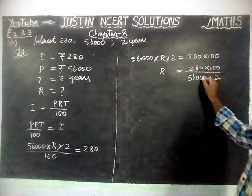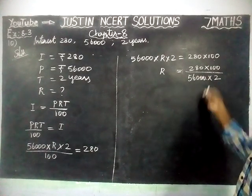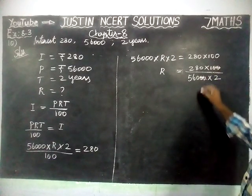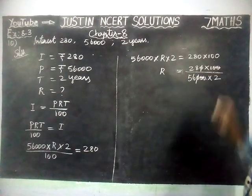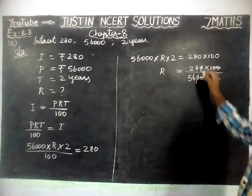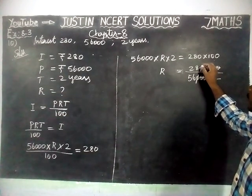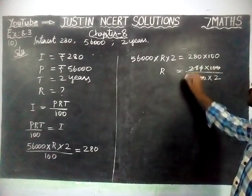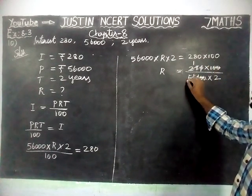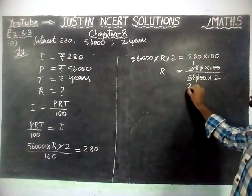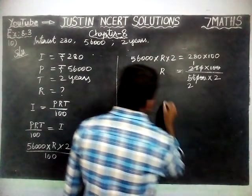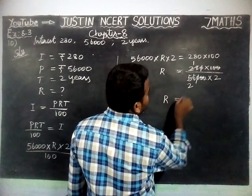Now, two zeros get cancelled from 280,000 and the denominator. Remaining: 28 divided by 56 — since 2 × 28 = 56, this simplifies, and the remaining value is equal to R.